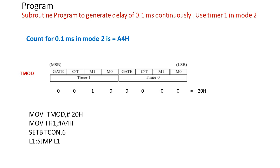Clearing TCON.6 stops the operation of the timer. However, generally this mode is used to generate a clock signal for the serial communication block, which determines the baud rate for serial communication data transfer. To generate a general-purpose delay, Mode 1 of the timer is typically used.